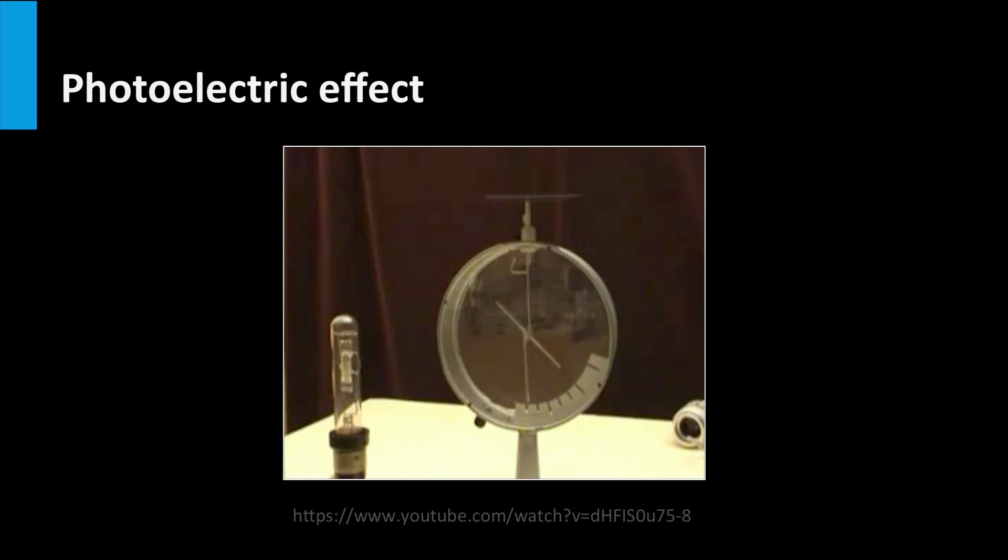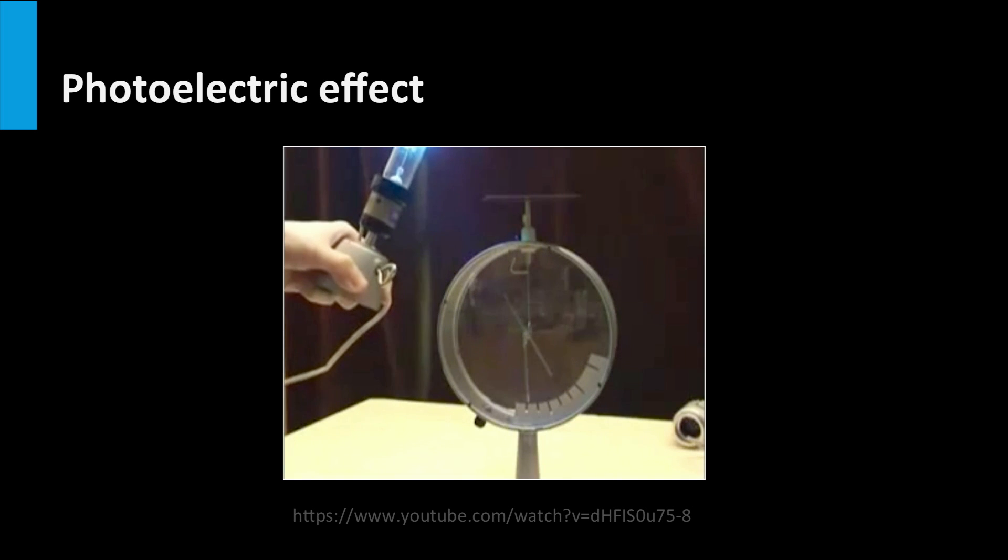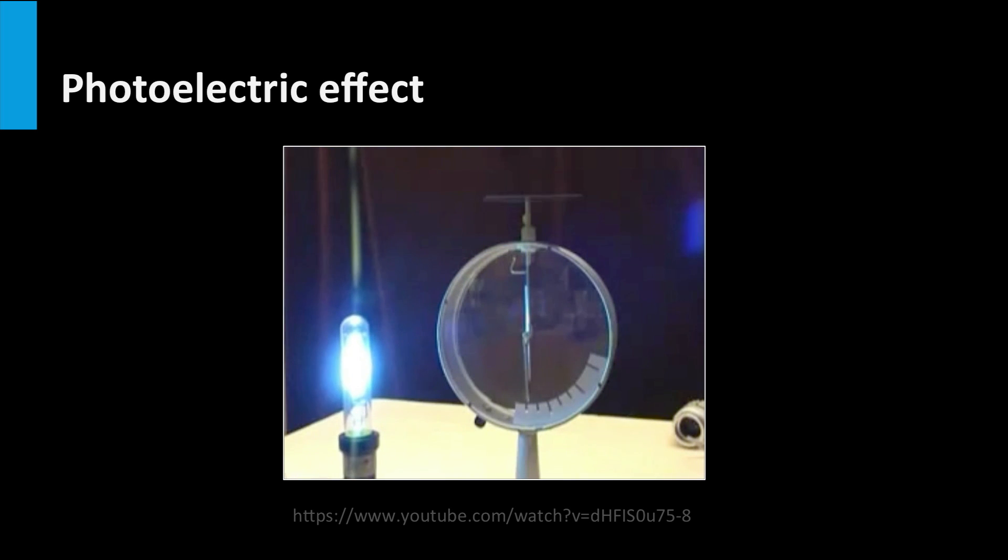The only way to discharge the electroscope very fast is by putting it in contact with other materials. For the moment we are waiting until the mechanical fluctuations of the electroscope are damped. Now the bar is illuminated with the lamp. What we see is that the light is able to remove the charges very fast. If you repeat this experiment with reddish light, this effect does not occur. It only occurs for bluish and ultraviolet light.